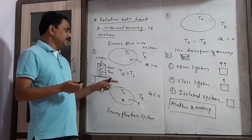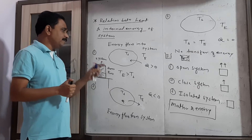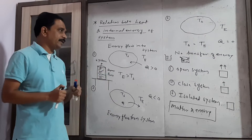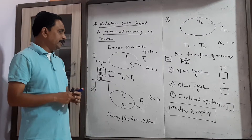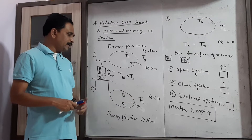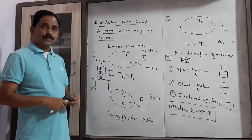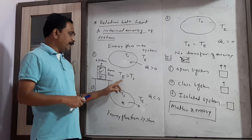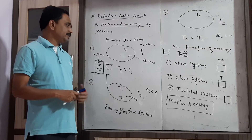Let T_s be the temperature of the system and T_e be the temperature of the environment or surrounding. There are three possibilities between these two temperatures: either T_e is greater than T_s, or T_s is greater than T_e, or T_s equals T_e. In the first case, the temperature of the environment is greater than the temperature of the system.